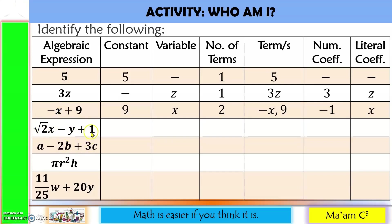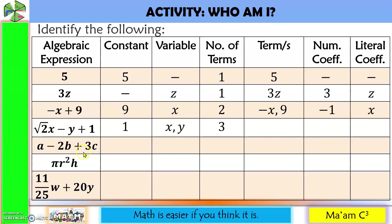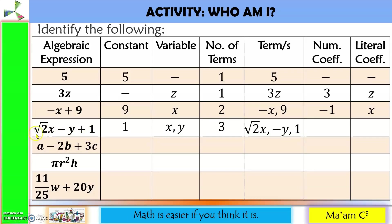Here, the constant is 1. The variables are x and y. We have 3 terms. Those terms are square root of 2x, negative y, and the constant 1. Numerical coefficients are square root of 2 and negative 1. Literal coefficients are x and y.